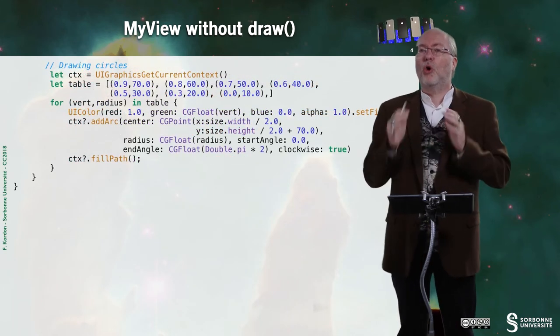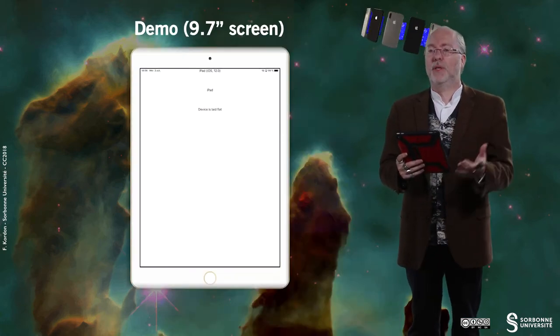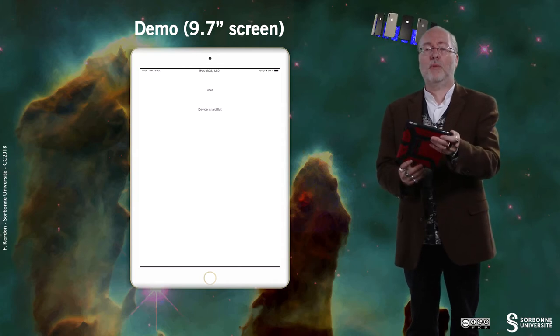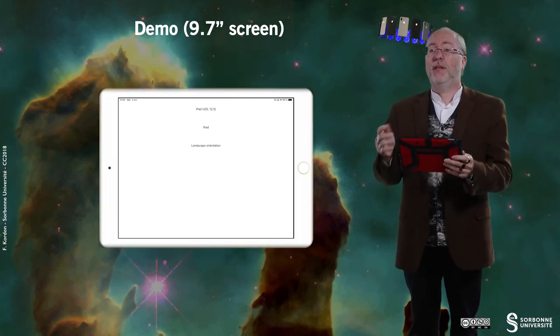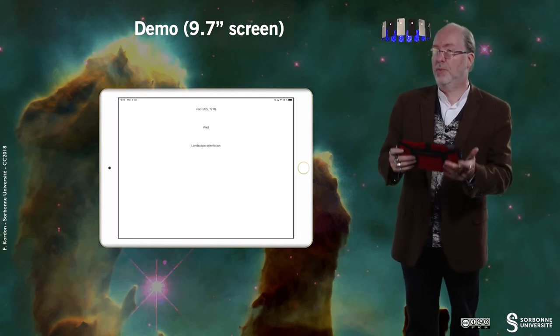And you remember, all this code was, in the previous version of my example, located in the drawRect method. Let's have a look on how it appears. And you see, you are surprised, that the label part is operational, but not the drawing in CoreGraphics.